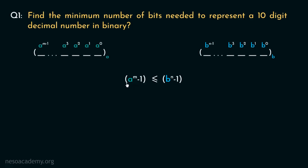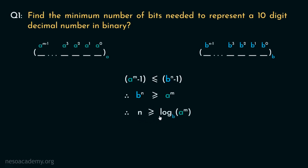Since a raised to the power m minus 1 can at most equal b raised to the power n minus 1, we can state that b raised to the power n is greater than or equal to a raised to the power m. Since we are interested in n, applying log base b to both sides, n is at least log base b of a raised to the power m. By the principles of logarithms, the exponent m comes down as a multiplicative prefix. This is the formula that will help us solve this type of question.